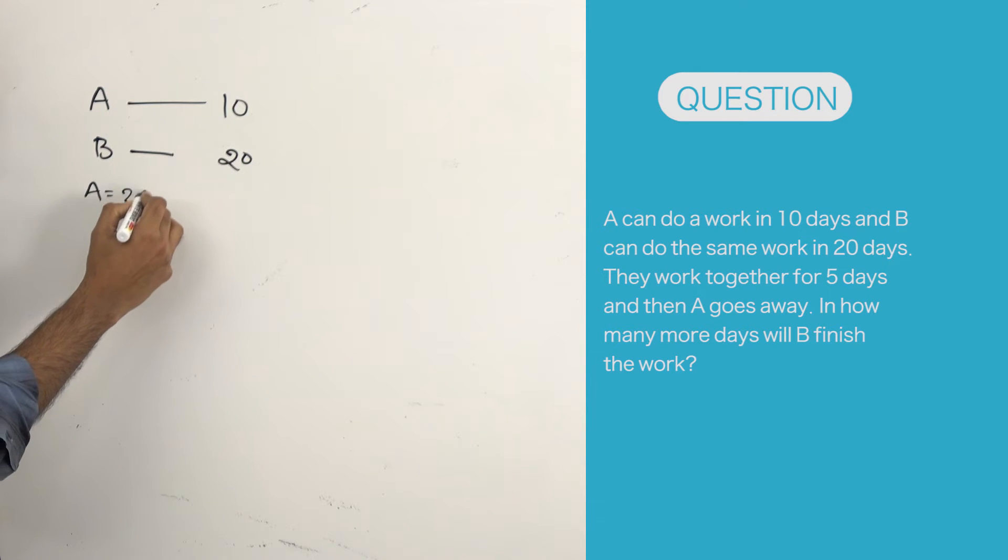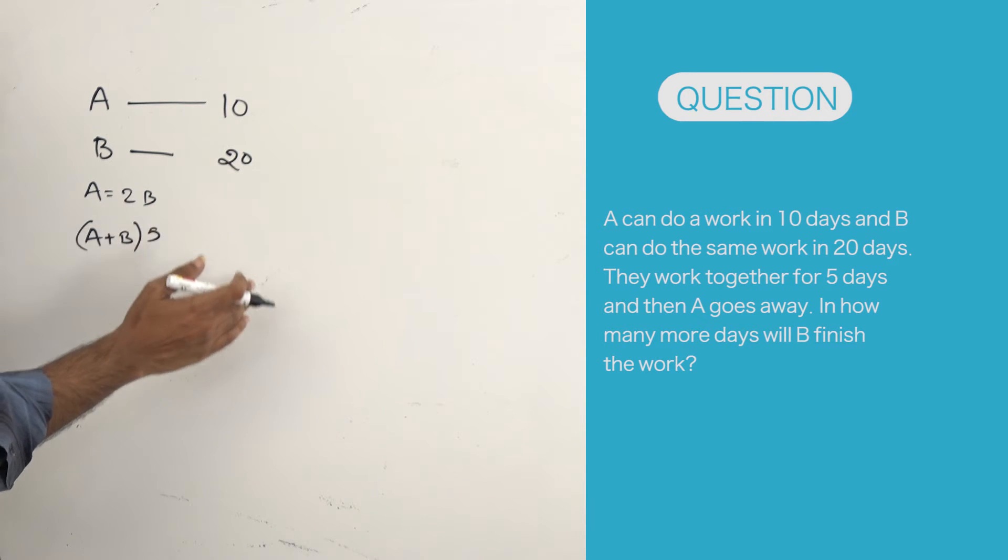Now what happened? They work together for 5 days. A and B together worked for 5 days. He is asking for how many days B has to work to finish the work because after 5 days A left.